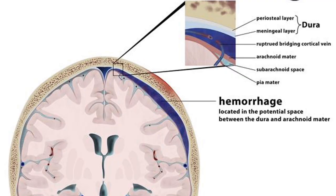The next type is a subdural hematoma. This involves ruptured cortical veins only, whereas in the extradural you can have either cortical veins or arteries. It usually occurs between the meningeal layer and the arachnoid mater, in the space above the subarachnoid space. This produces a convex appearance, whereas the extradural showed a concave appearance.